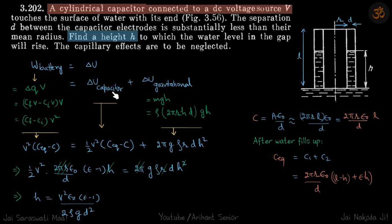Delta U of the capacitor is half CV square minus half CV square, final minus initial, which should be this.